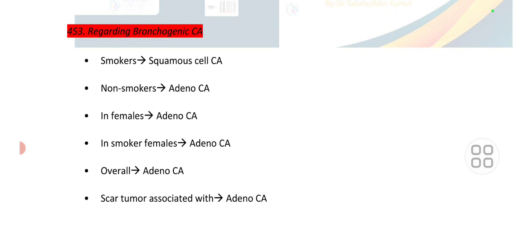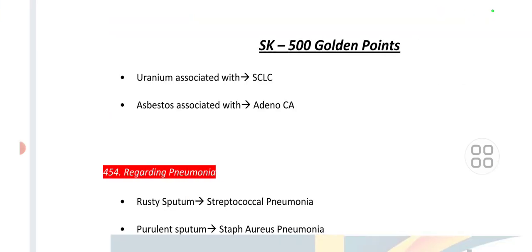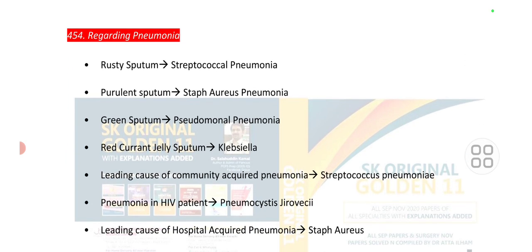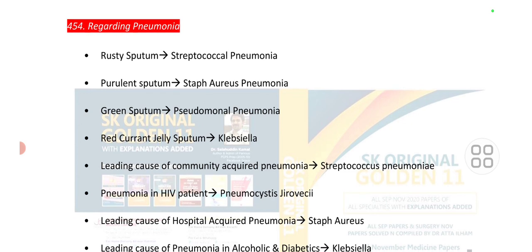Point number 453 is regarding bronchogenic carcinoma. In smokers, the most common carcinoma is squamous cell carcinoma. In non-smokers, it is adenocarcinoma. In females, it is adenocarcinoma. Overall, adenocarcinoma is a scar tumor. Uranium is associated with squamous cell carcinoma large subtype. Asbestos is associated with adenocarcinoma.